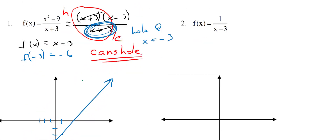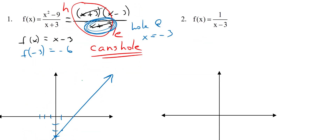Now this next one has nothing to cancel out, so there's no hole — it is actually an asymptote. With rational functions, you have vertical and horizontal asymptotes. The vertical asymptote is found by setting the denominator equal to zero. So x - 3 = 0 gives us x = 3. That's our vertical asymptote.